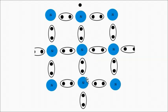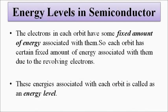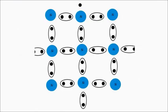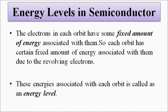These four valence electrons in the outer orbit form covalent bonds with the neighboring silicon atoms to form the atomic structure of silicon. This will be very helpful when we discuss the fabrication of n-type and p-type semiconductors. This is the atomic structure of silicon. Another important thing is the energy level in the semiconductor.